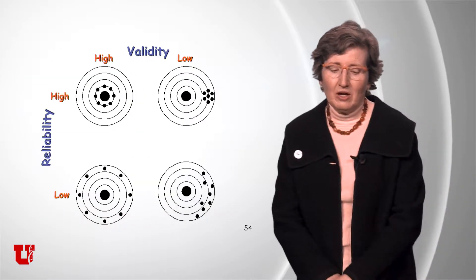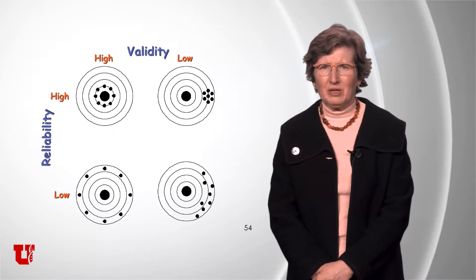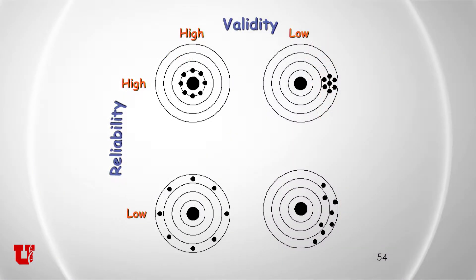In epidemiology, we talk about both validity and reliability of a measurement. The ideal is measurements that are both valid and reliable. If the bullseye is the truth — the gold standard or true biological value — and all your measurements are clustered right around the bullseye, the average value of all your measurements equals the truth, and no individual measurement deviates very far. That's both valid and reliable.